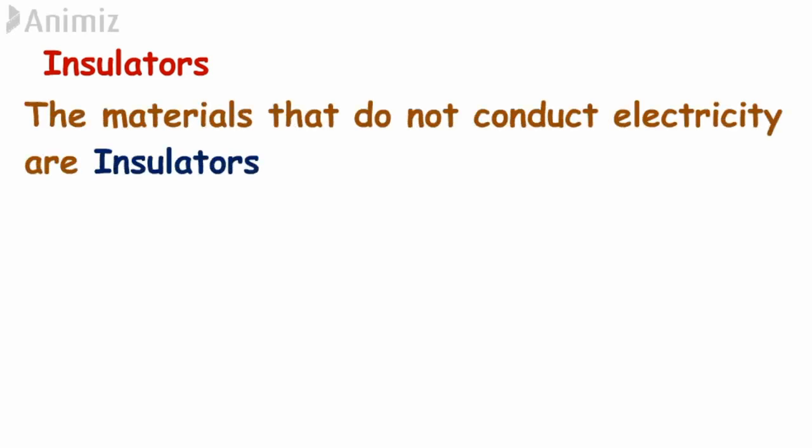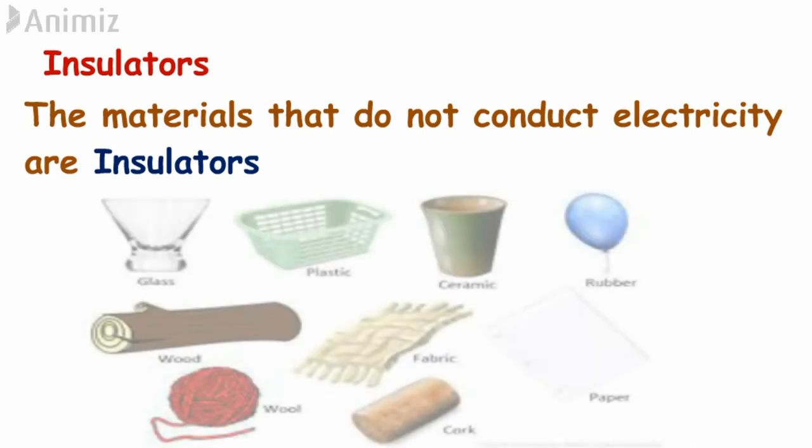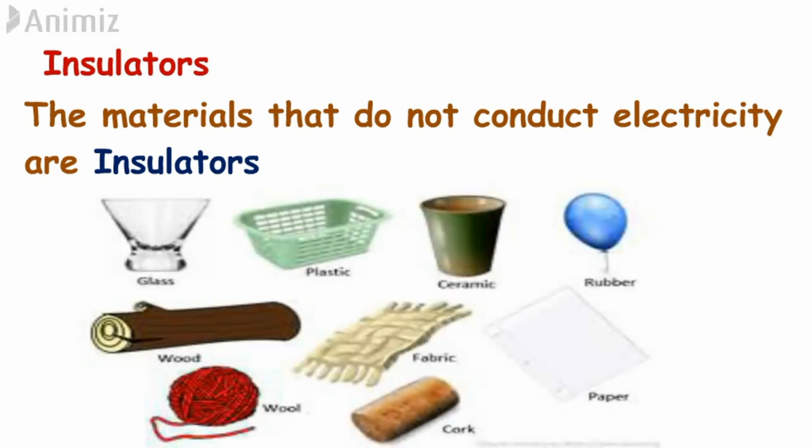Okay, now let's see what are insulators. This is opposite to the conductors. The materials that do not conduct electricity are known as insulators. Glass, plastic, ceramic, rubber, wood, wool, cork are some of the examples for insulators.